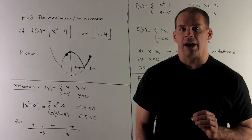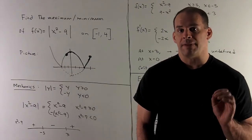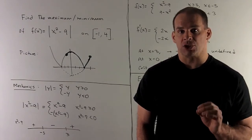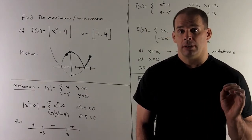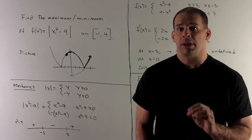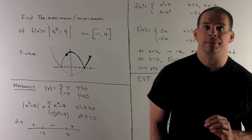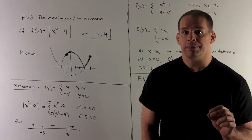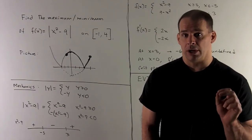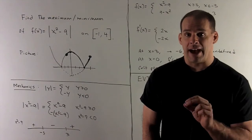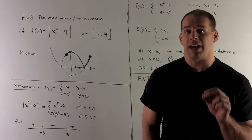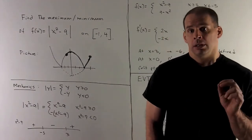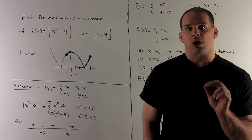Here's another example of the Extreme Value Theorem. Find all maximum and minimum values of f(x) = |x² - 9| on the interval [-1, 4], including the endpoints. That's a closed interval. The Extreme Value Theorem says if f is a continuous function on a closed interval, then f attains its maximum and its minimum value on that interval.